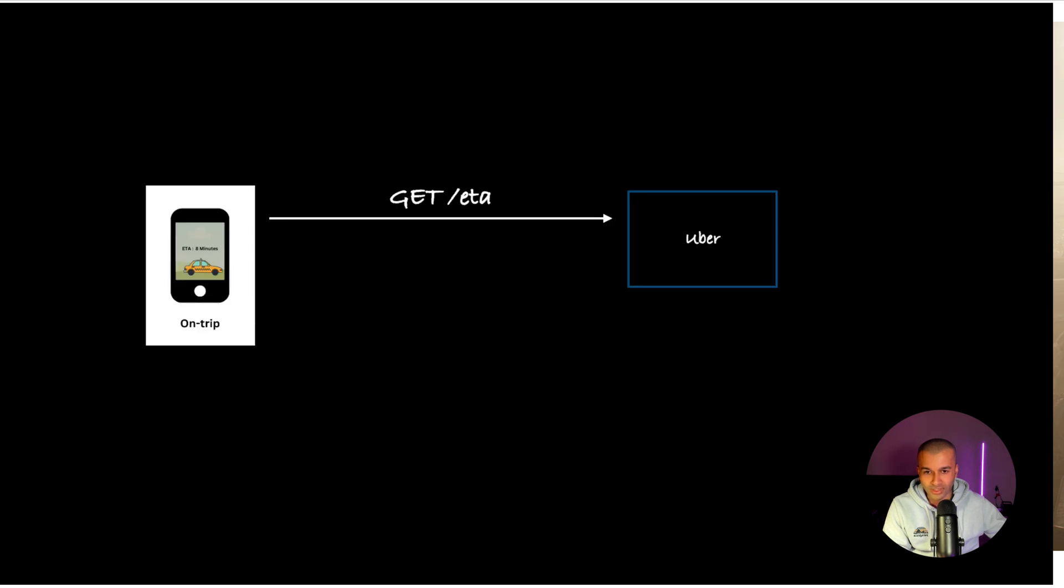If you're on your trip, this is the GET request that you would submit to Uber. This is the GET ETA request and this is going to contain the GPS signal. This payload will contain latitude, longitude, direction, and speed. With this, Uber is going to take the GPS signal and try to find the appropriate road segment that's associated with that GPS signal.